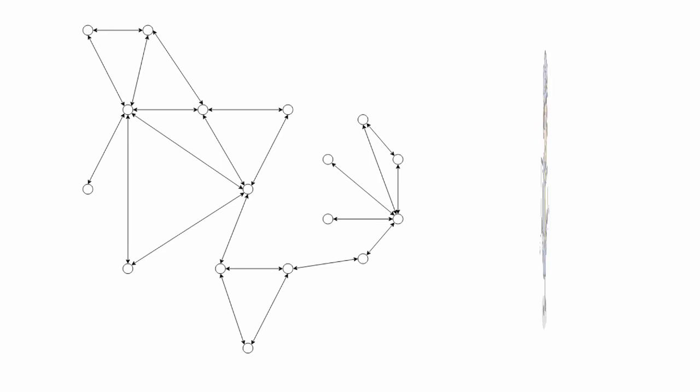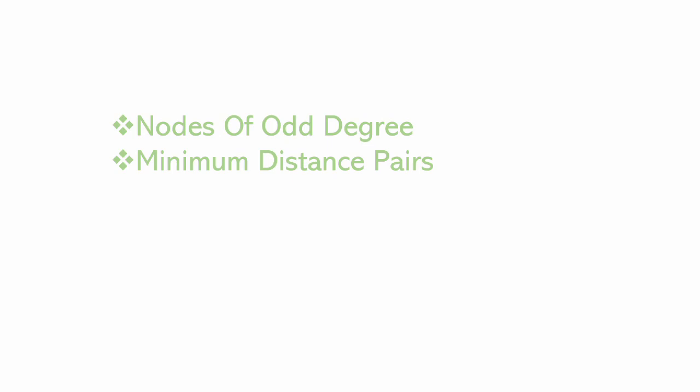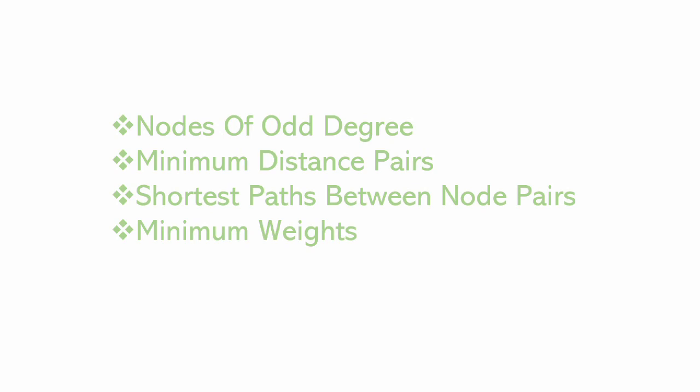So how would we solve it for even larger scenarios? We can implement the chart method by using technology to find these graphs. The basic steps for doing this have us find the nodes of odd degree, find the minimum distance pairs, compute the shortest paths between the node pairs and the minimum weights, and ultimately reach the solution.